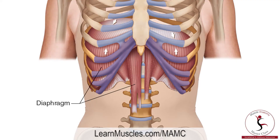We have an anterior view of the trunk and we are looking at the diaphragm muscle. The diaphragm actually originally evolved from being two separate muscles on the left and right sides of the body that then blended into each other, but the diaphragm is usually treated as if it is one muscle that spans across both sides of the body.